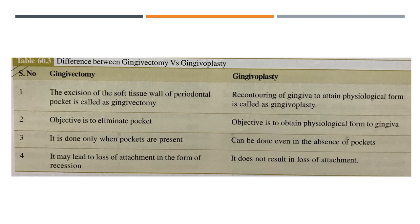Differences between gingivectomy and gingivoplasty: gingivectomy is excision of the soft tissue wall of the periodontal pocket with the objective of eliminating the pocket, done only when pockets are present. Gingivoplasty is recontouring of the gingiva to obtain a physiologic form, performed in the absence of pockets. Gingivectomy can lead to loss of attachment in the form of recession since gingiva is removed, whereas in gingivoplasty there is no loss of attachment as the gingiva is merely repositioned to a proper physiologic form.